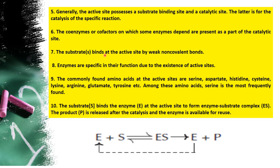The seventh point is: substrates bind in the active site by weak non-covalent bonds. They are called weak non-covalent bonds because once the substrate undergoes changes and is converted to product, it has to leave the enzyme — the product comes out and the enzyme is released. That is why the substrate binds at the active site through weak, non-covalent bonds.